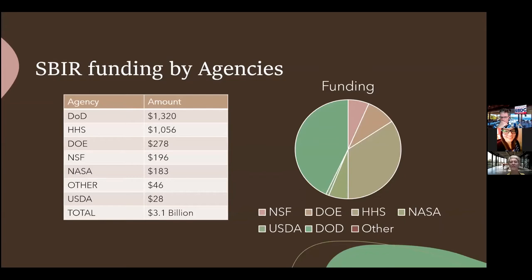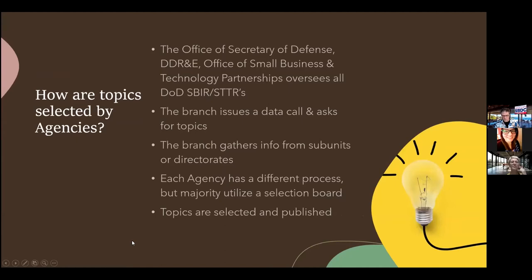Some of these agencies have really drawn-out processes. It can take up to 25 months for companies to get funding. So if it's a low-budget agency with a long timeline, it may not be worth the time to figure out how to crack the code on that agency. That's why it's really important to understand those differences.